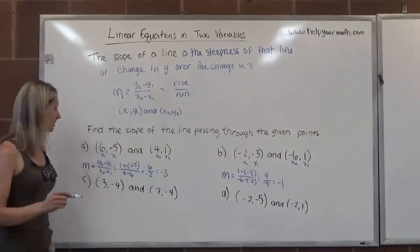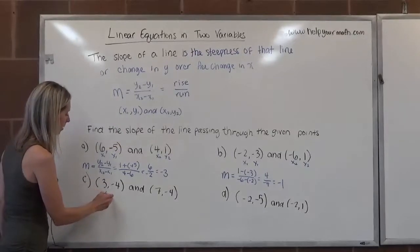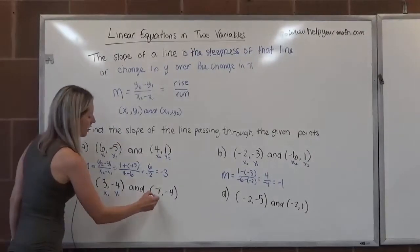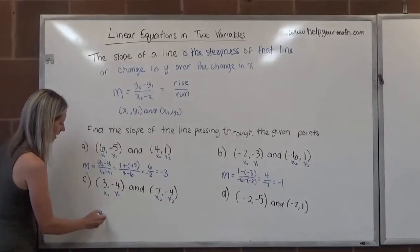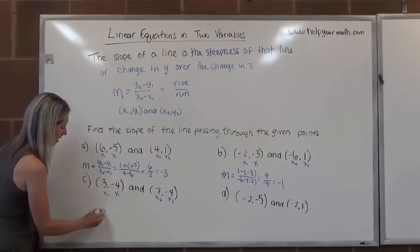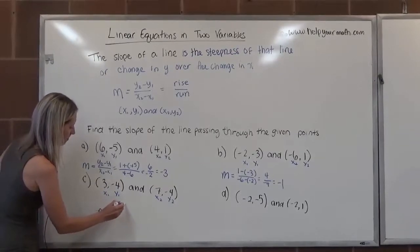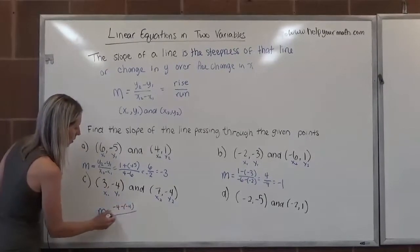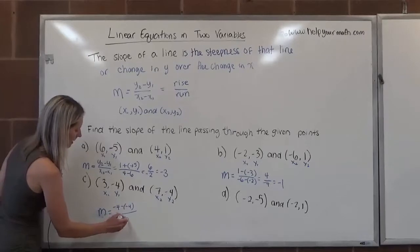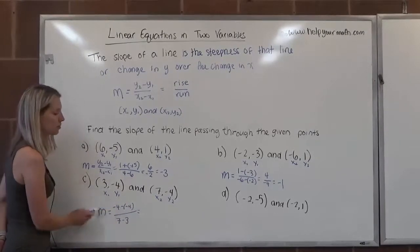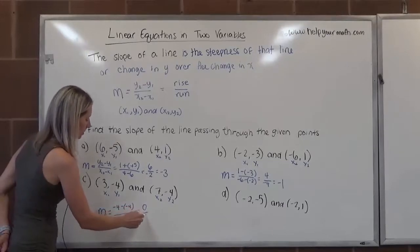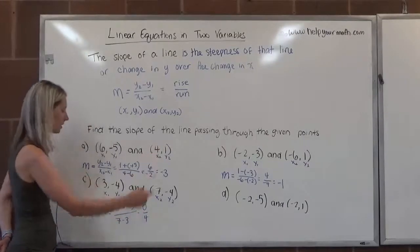Looking at our next example, we have x1, y1, and x2, y2. If we go to plug in, y2 equals negative 4 minus negative 4 over 7 minus 3. Negative 4 minus negative 4, well, any number subtracted by itself is 0, so 0 over, it doesn't even matter what this is. It's 4.